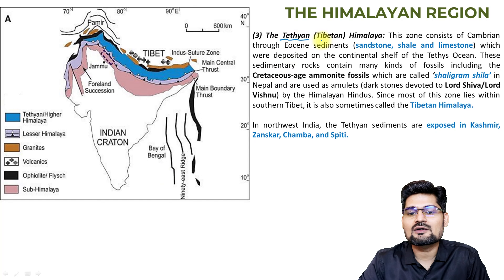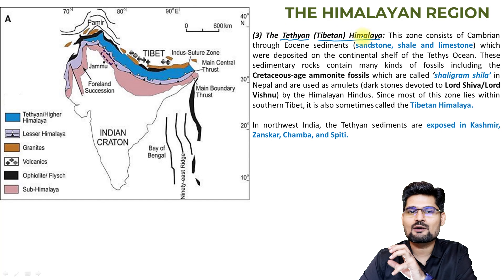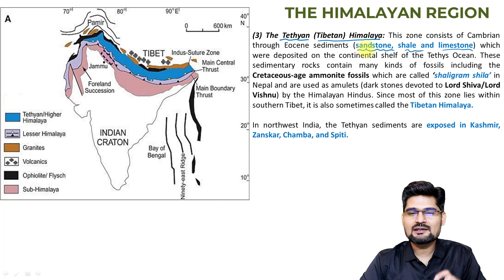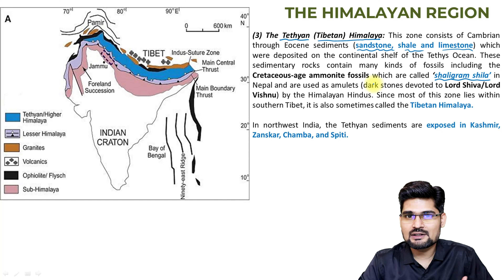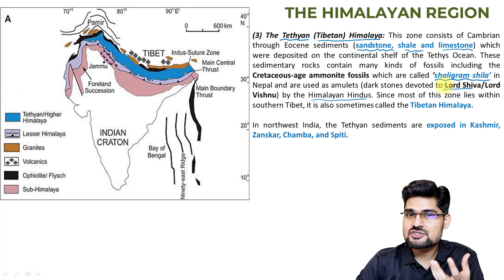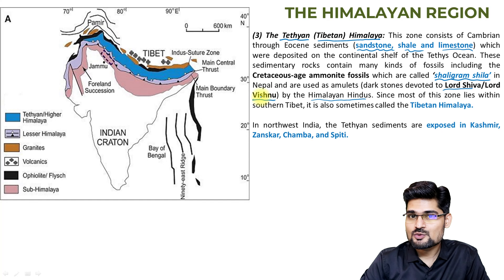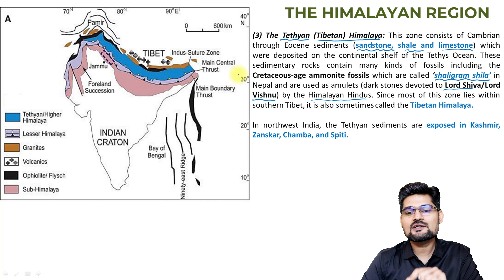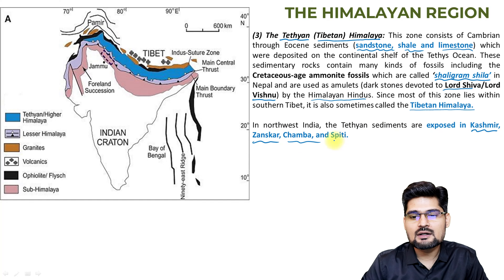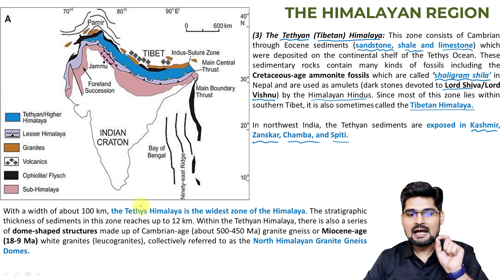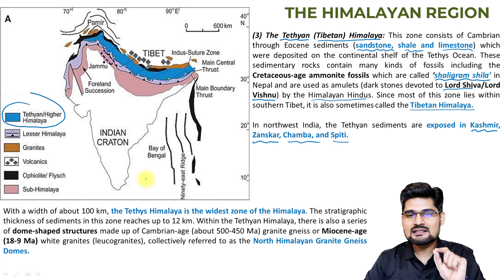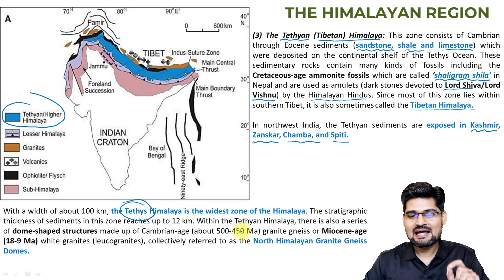The third zone is the Tethyan or Tibetan Himalaya. If you travel to Lahaul-Spiti, northern Sikkim, or Ladakh, you'll see sandstone, shale, and limestone. The most famous find here is the Shaligram Shila — ammonite fossils with great significance in Hinduism, worshipped as Lord Shiva or Lord Vishnu. This zone is found in Kashmir, Zanskar, Chamba, and Spiti in northwestern Himalaya. It is about 100 kilometers in width and is credited to the Miocene age.